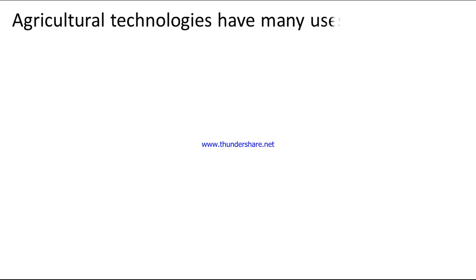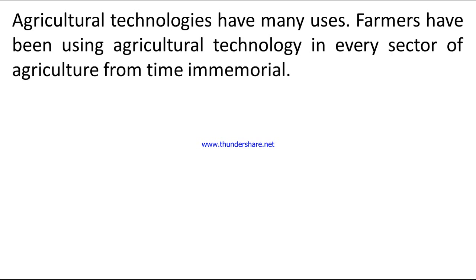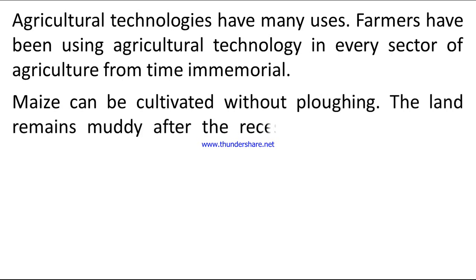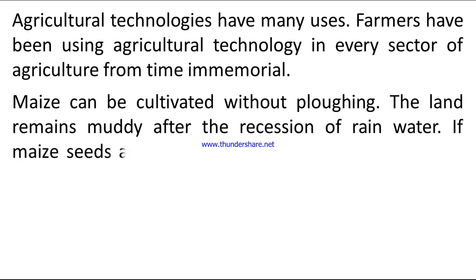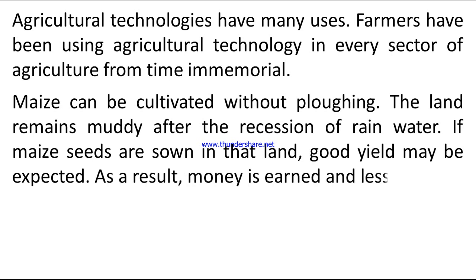Agricultural technologies have many uses, and farmers have been using them in every sector of agriculture from time immemorial. Answer 4: Maize can be cultivated without plowing the land. When the land remains muddy after the recession of rainwater, if maize seeds are sown in that land, a good yield may be expected. As a result, money is earned and less labor is required.